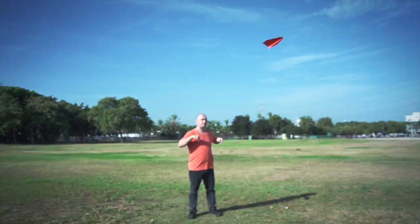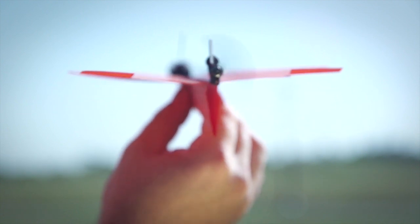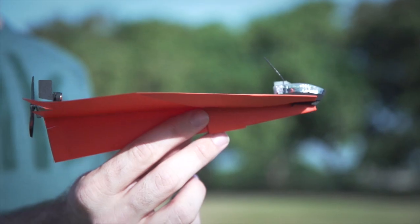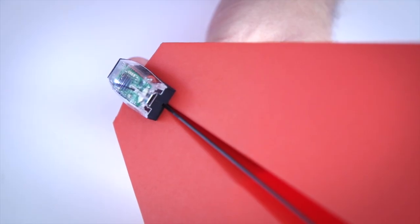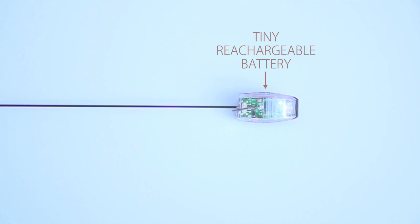In the back of the module are a propeller and a rudder that are in charge of controlling the plane. In the front there's an advanced chip with powerful Bluetooth smart technology for an amazing 60 yards of controlled flight and a tiny rechargeable battery to power this amazing beast.